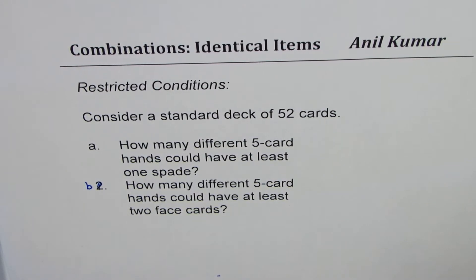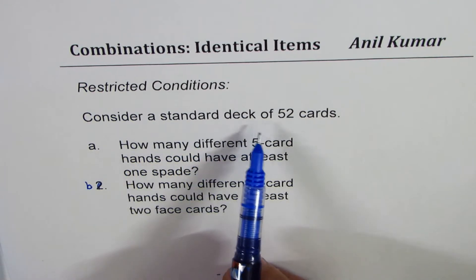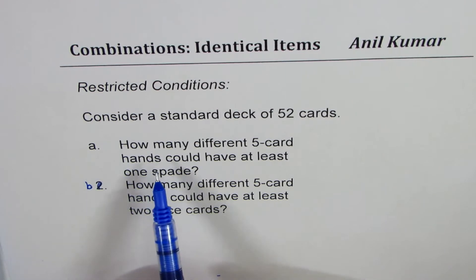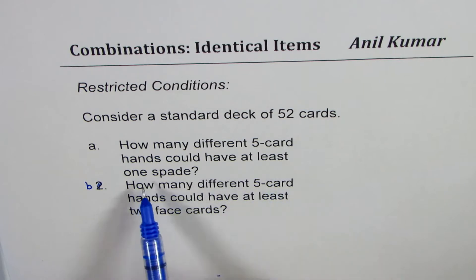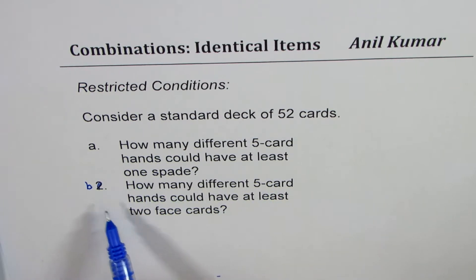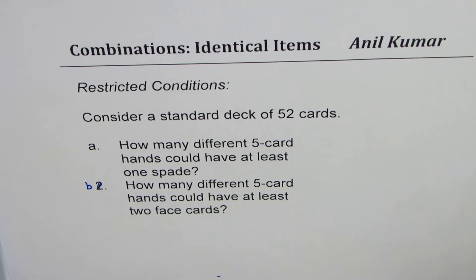I'm Anil Khobar and in this video we'll try to understand how to find the combination of elements when we have identical elements and some restrictions. Our example is: consider a standard deck of 52 cards. Part A: how many different five card hands could have at least one spade? And Part B: how many different five card hands could have at least two face cards? You can always pause the video, answer the question, and then look into my suggestions.